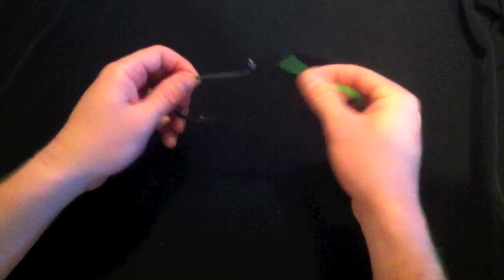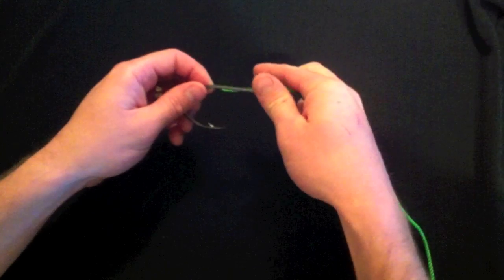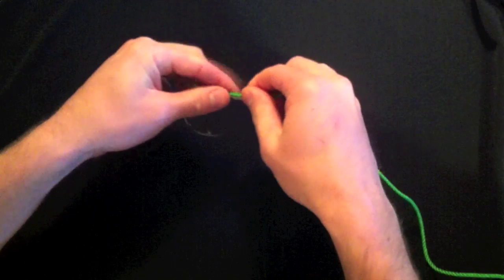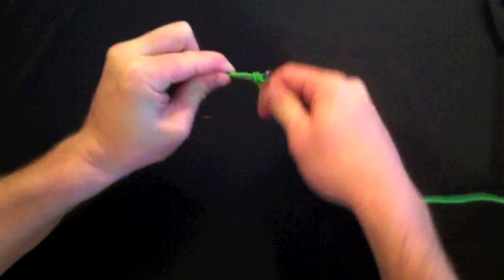So here's how you tie an egg loop. We're going to feed the line through the eye of the hook. We're going to wrap around five to seven times.